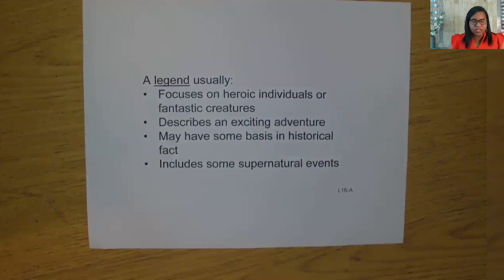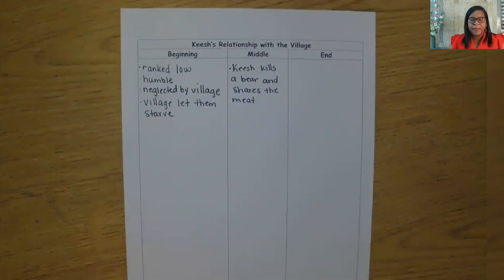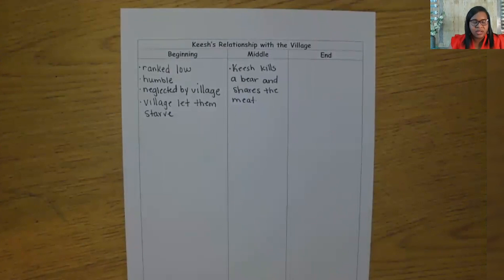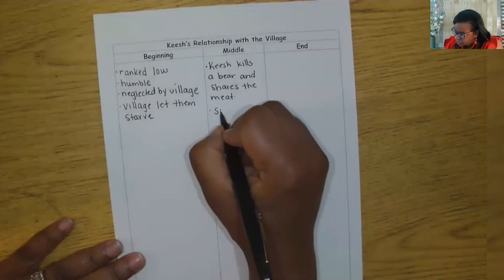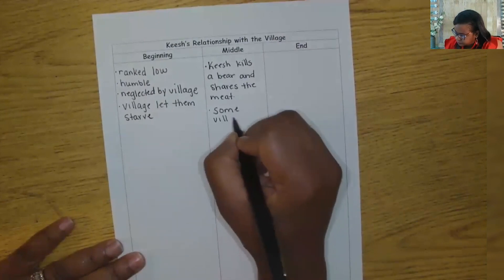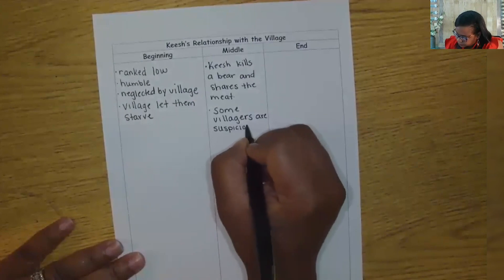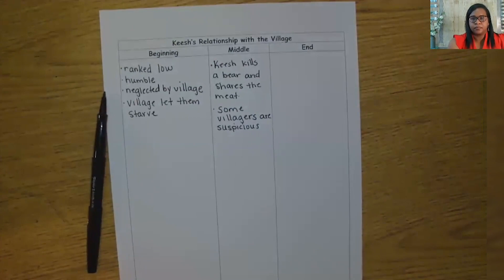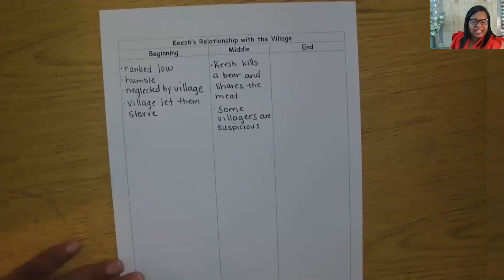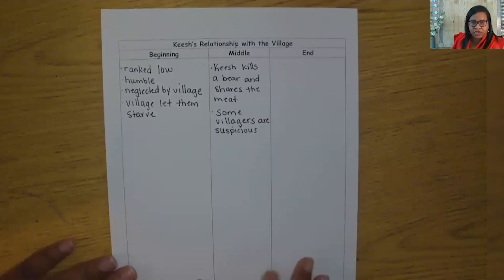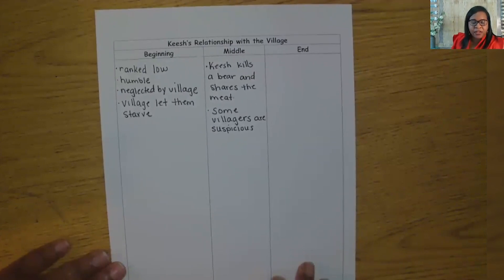Now, what do we notice about Quiche's change of relationship with the villagers? Regardless, over time he gained popularity and respect, and people came to count on him to bring meat to the village. There was even talk of making him the next chief. Jot down your ideas on your chart. On my chart, I'm going to write that some villagers are suspicious, but we also see that Quiche is becoming popular and respected by villagers. So let's add that to our chart as well.